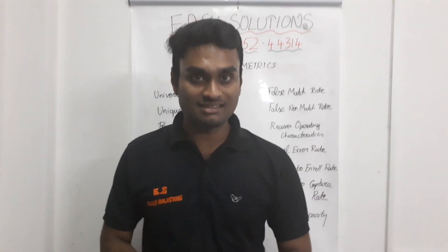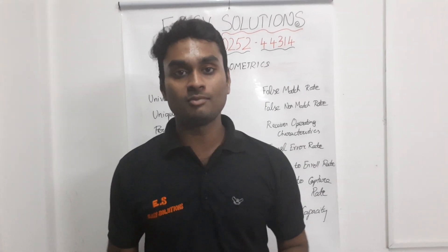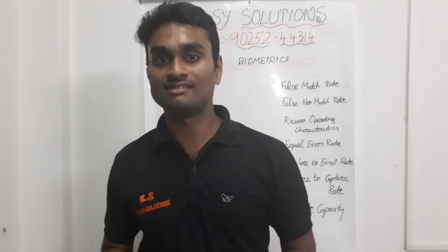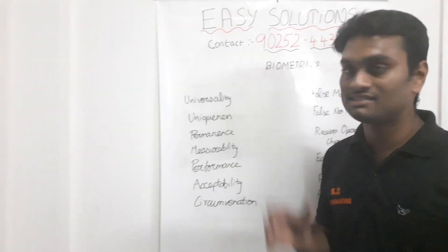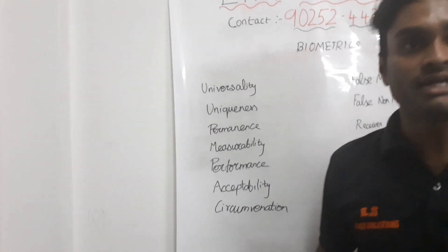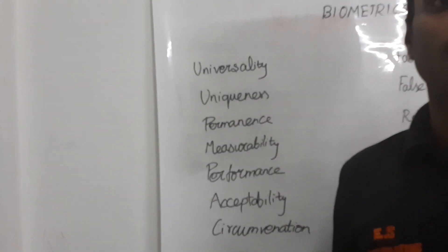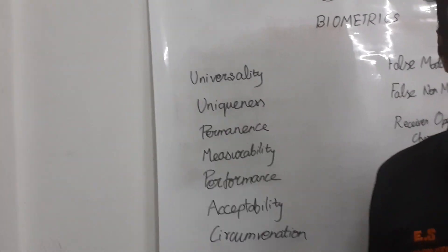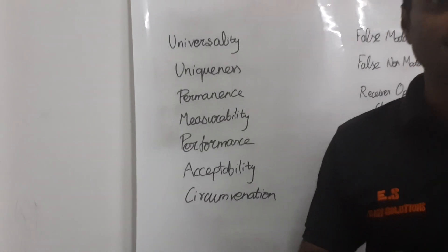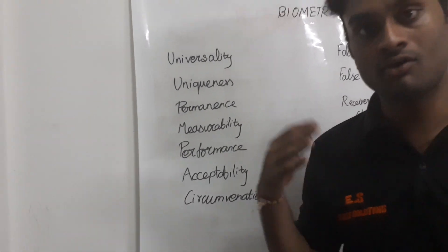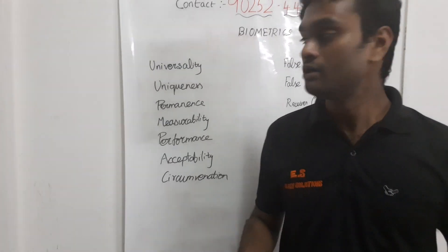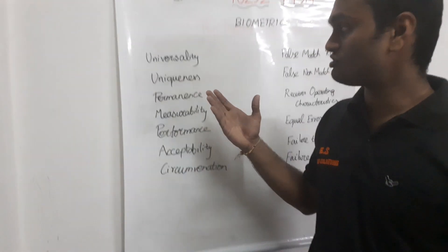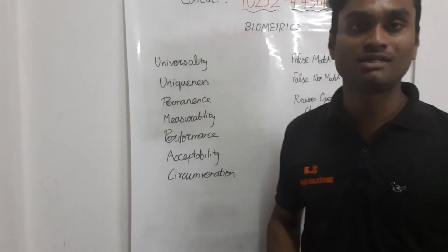What are the characteristics of biometrics? First of all, universality — if you have a unique feature, it can be used. Each person is unique. That is the concept of permanence.